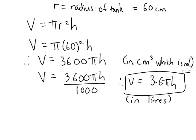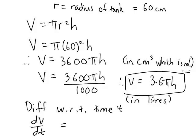So the next step, so we can see how these quantities are changing with relation to each other over time, is always to differentiate with respect to time t. So that means we're going to have dV/dt. And here we have 3.6 π h. So by the chain rule, we're going to be differentiating that with respect to h, and that will then be multiplied by dh/dt.